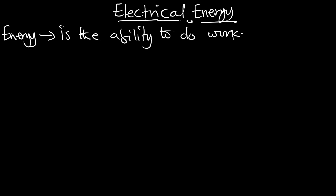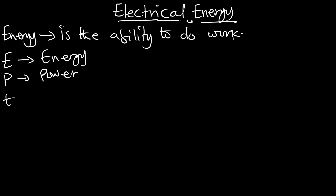So now, we are going to write down our parameters. We know that we use E to represent our energy. For energy, we have P, which is the power. We also have T, which is going to represent our time, and I, going to represent our current.